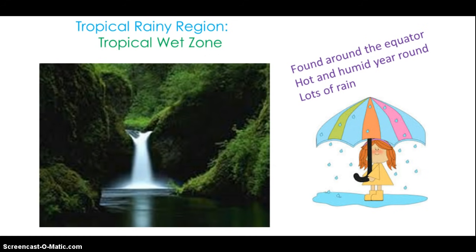Tropical wet gets its name from the regular rainfall it receives throughout the year — it sometimes rains every day. The reason it rains so much is because of the regular warm temperatures around the equator, which evaporate water and keep the humidity high. Most areas of tropical wet receive over 100 inches of rain per year, although some receive nearly 300 inches. The constant rain and direct sunlight allow tropical rainforests to develop. Tropical rainforests only cover 6% of the earth's surface, yet they produce 40% of the oxygen and support nearly half of all plant and animal species. These forests are so packed with trees that the top canopy layer often blocks all sunlight from reaching the forest floor.